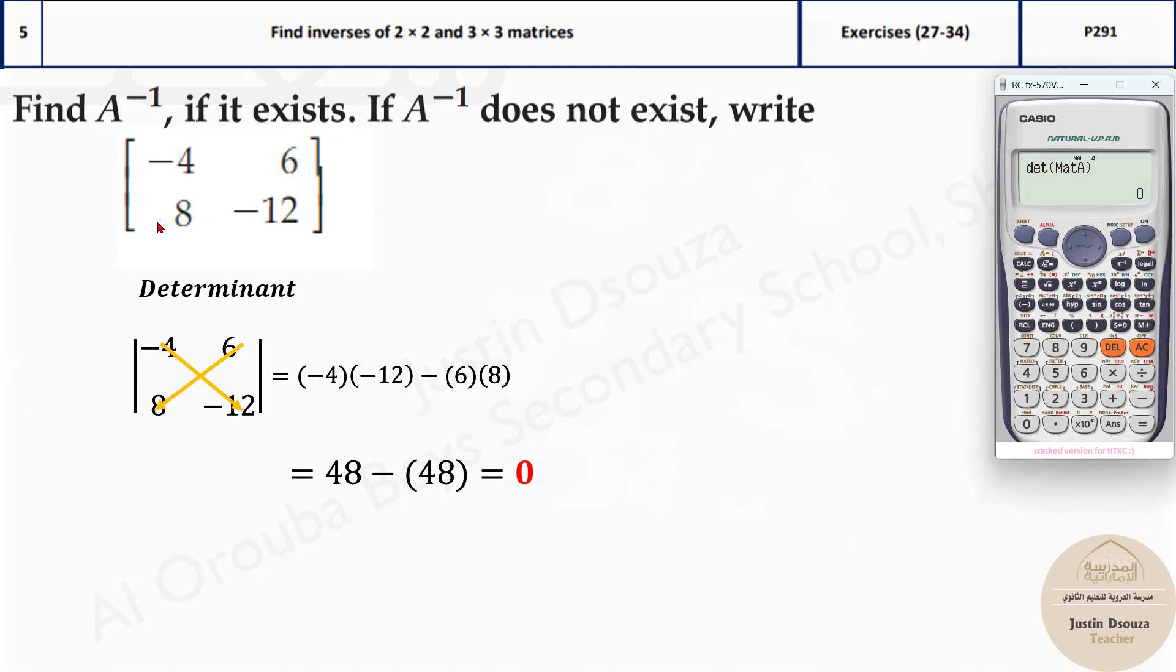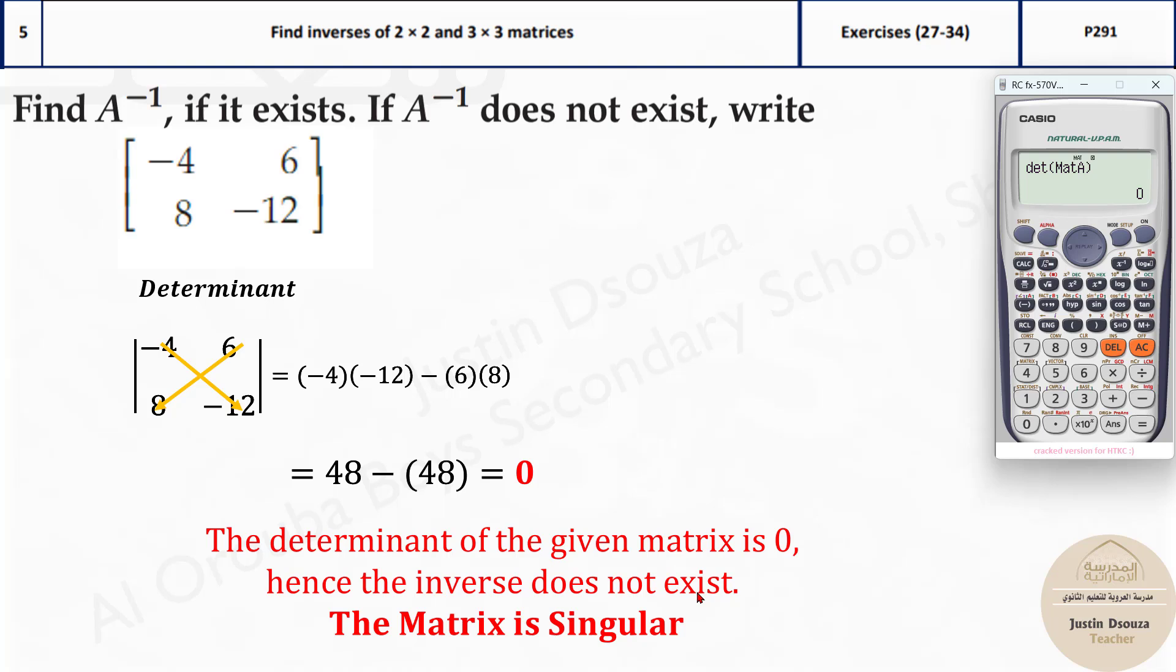And then find the determinant. If your determinant is 0, that means this is a singular matrix. The determinant, it does not exist. Inverse does not exist.